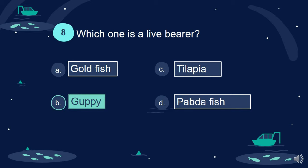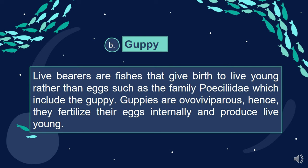Answer: B. Guppy. Live bearers are fishes that give birth to live young rather than eggs, such as the family Poeciliidae, which includes the guppy. Guppies are ovoviviparous; hence, they fertilize their eggs internally and produce live young.